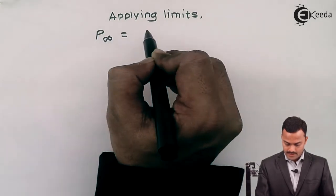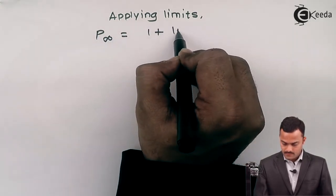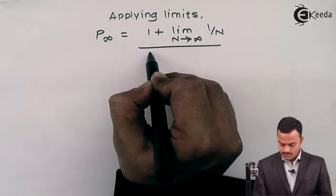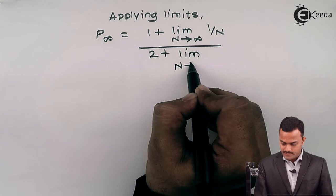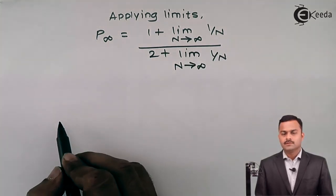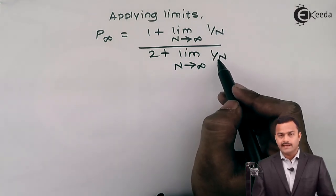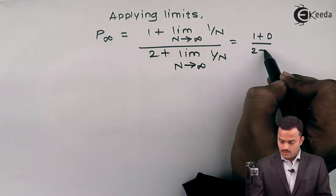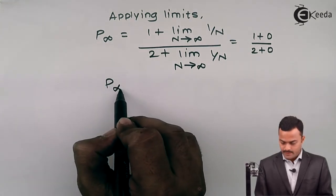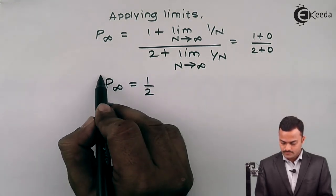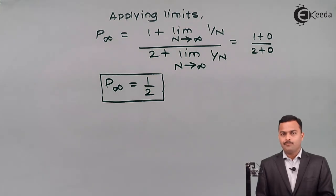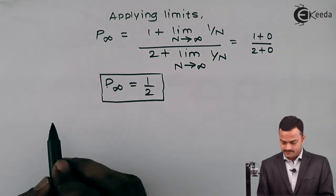Applying the limit, P infinity equals 1 plus the limit as N tends to infinity of 1/N, all over 2 plus the limit as N tends to infinity of 1/N. Since anything over infinity equals 0, this becomes 1 plus 0 over 2 plus 0, giving P infinity equals 1/2. Since the power is a finite number, the signal is a power signal.